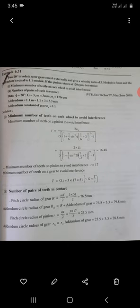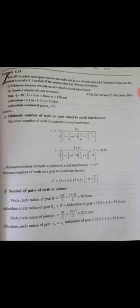We need to find minimum number of teeth and number of pairs of teeth in contact. So the data: phi is 20 degrees, G is 3, module M is 3 mm, and addendum is 1.1.